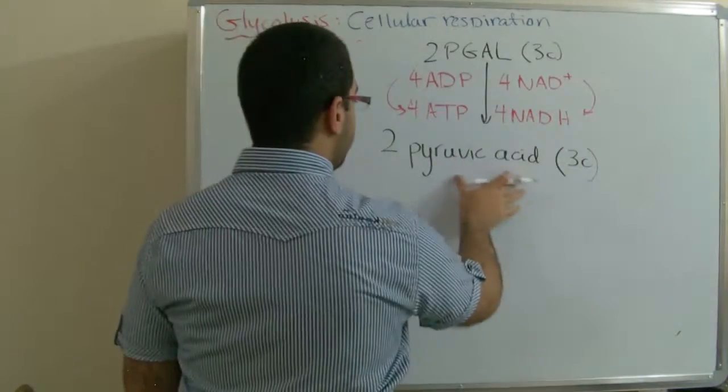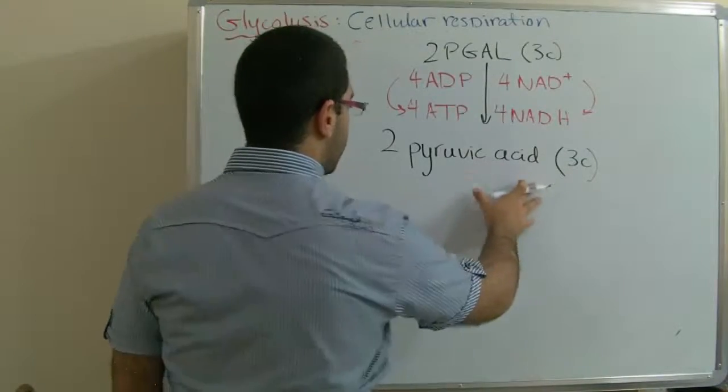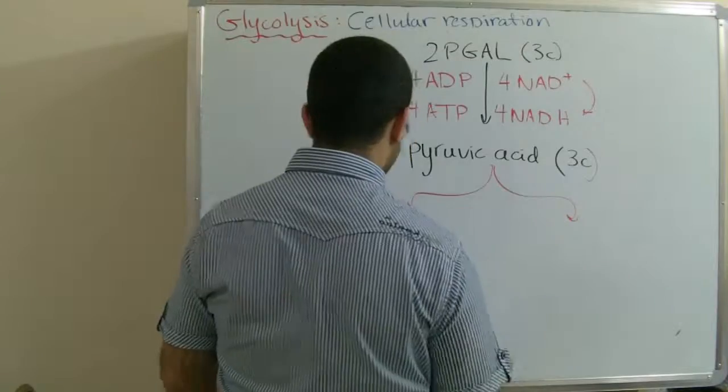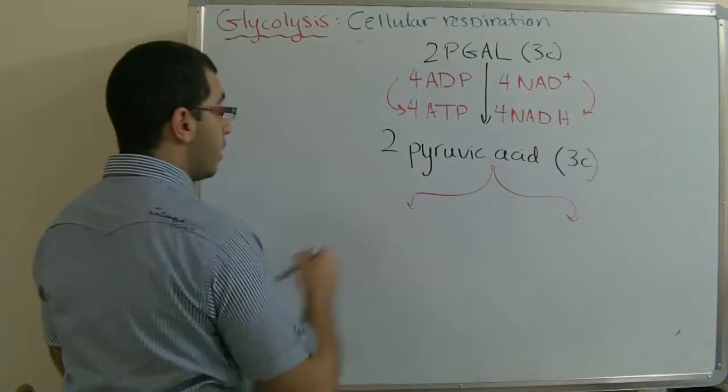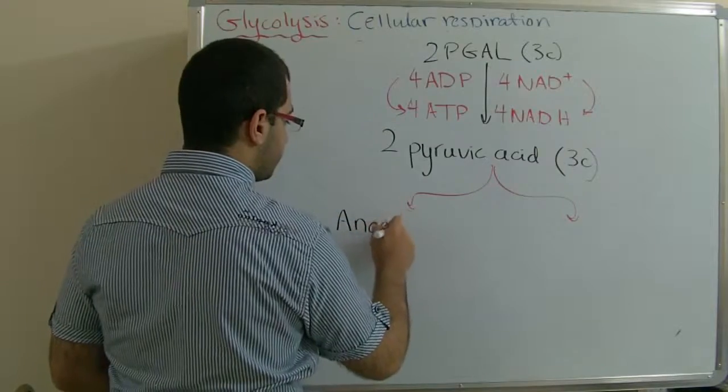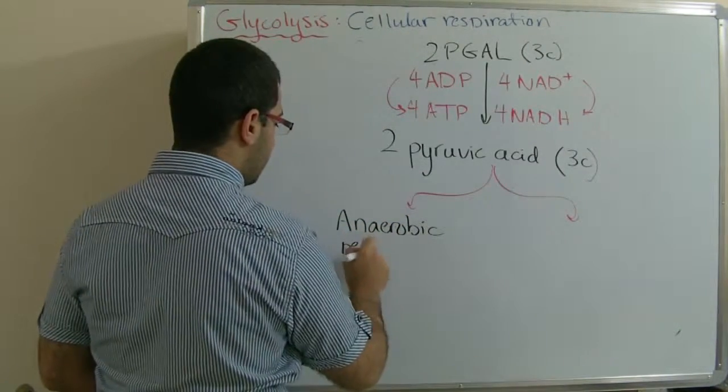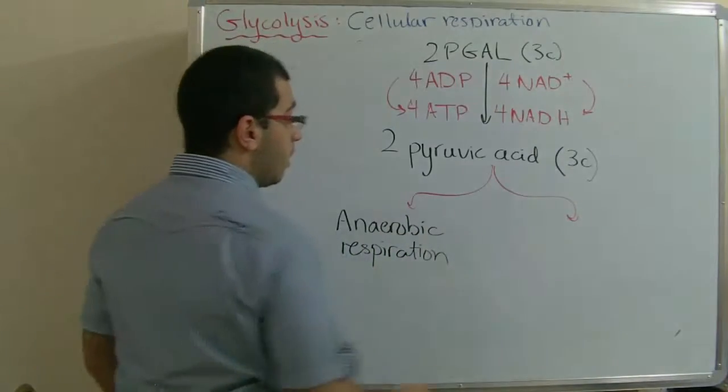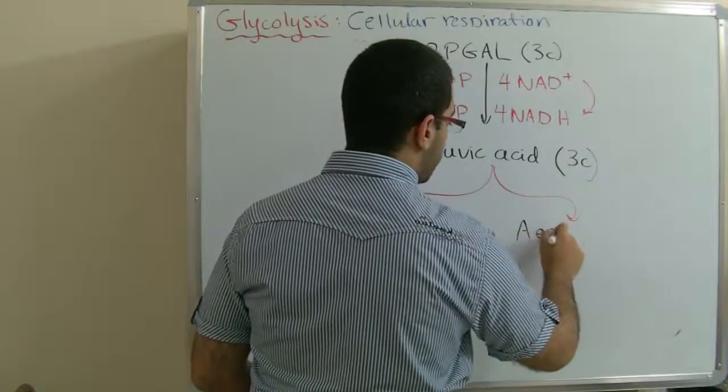Then, these two pyruvic acid molecules have two conditions, either to go under anaerobic respiration, which we will discuss later, or aerobic respiration, so they undergo the Krebs cycle, the next step.